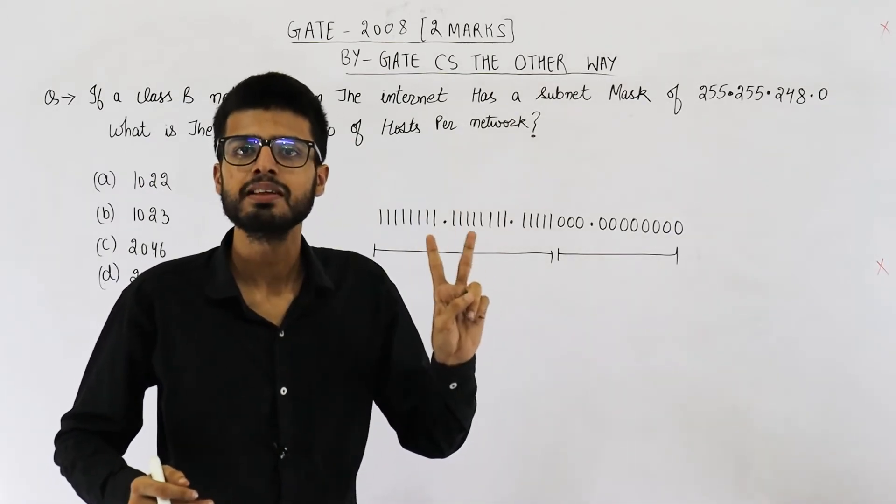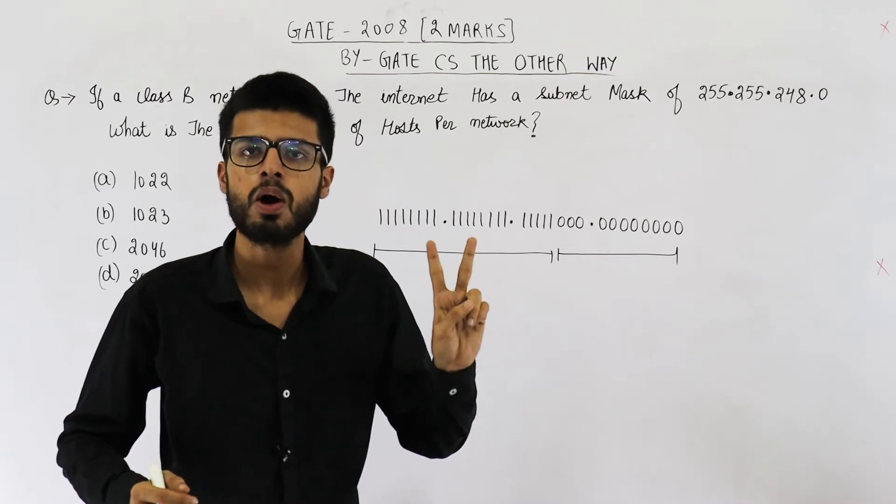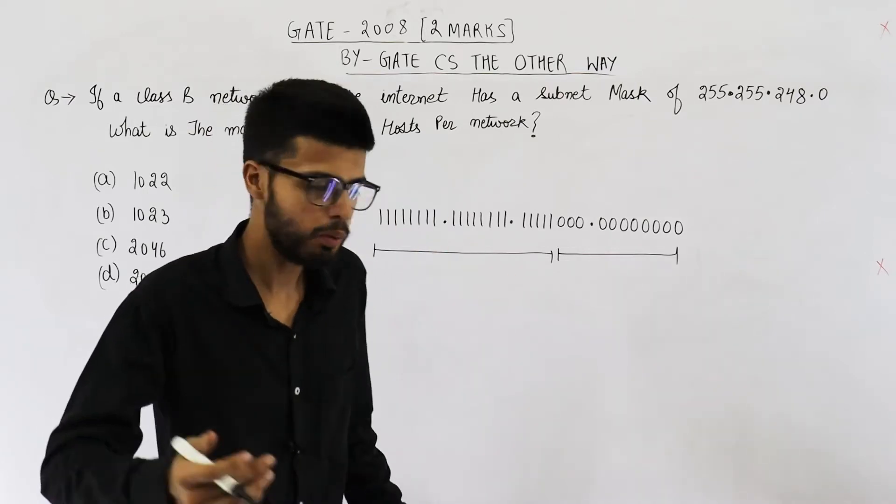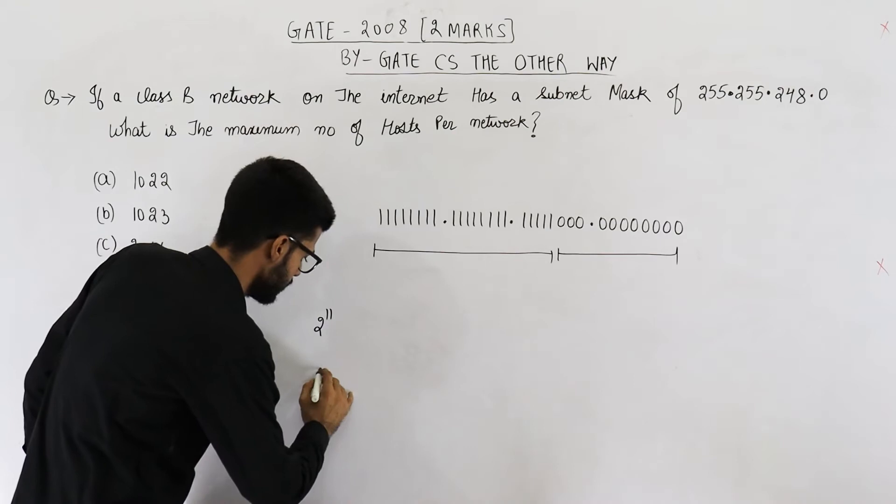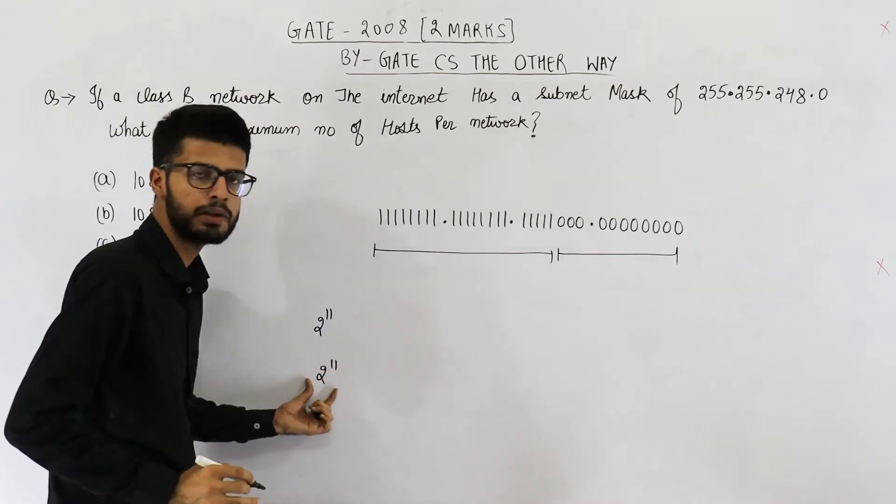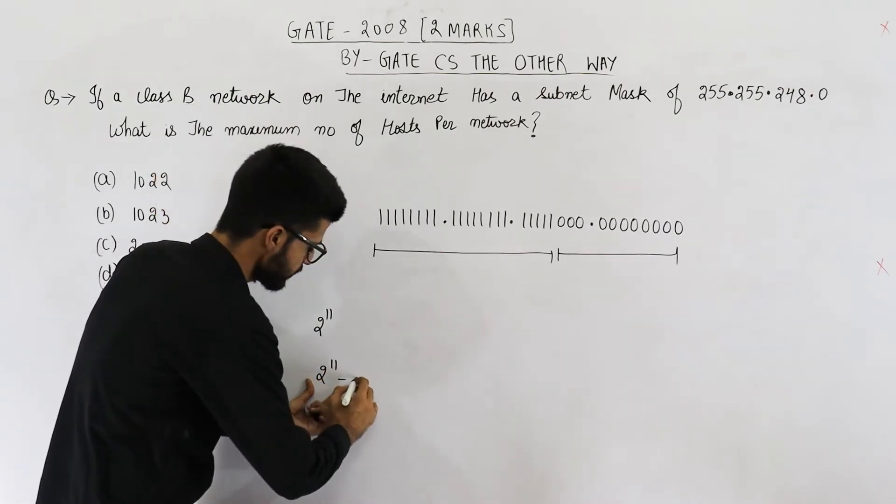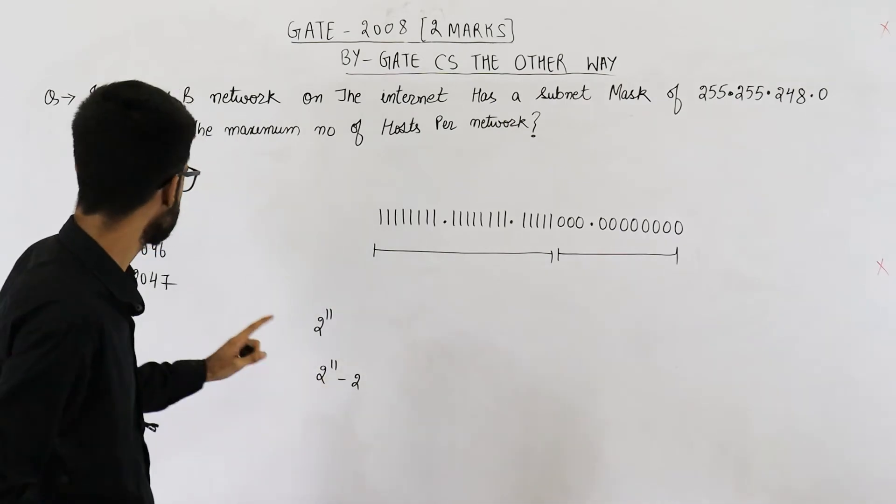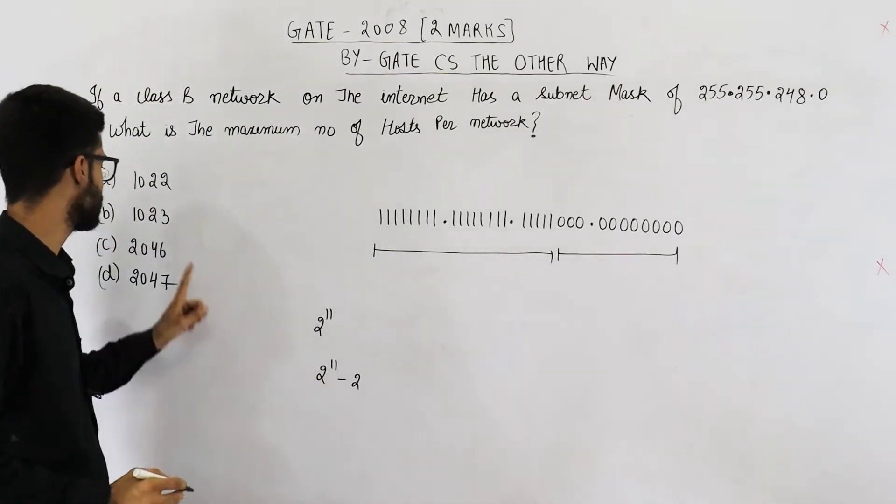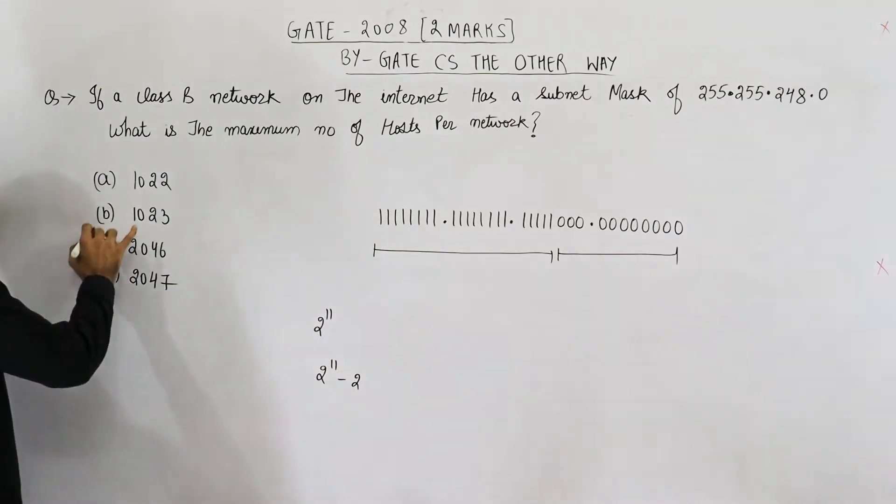And 2 IP addresses will be wasted and they will not be assigned to any host. How many hosts can be configured? It is total number of IP addresses available minus 2. So this is 2048 minus 2 that is 2046 option C.